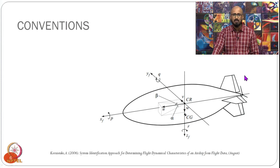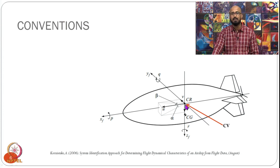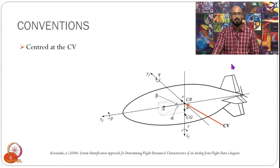Let us look at some conventions used in dynamics modeling of an airship. The first major difference compared to conventional aircraft is that we center the dynamics model at the center of volume rather than the center of gravity. The reason is that the center of gravity keeps changing due to ballonets inside the airship, which can change the air distribution and thereby shift the center of gravity.